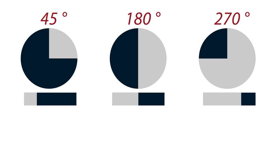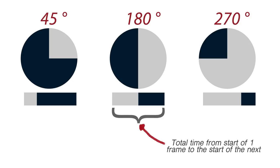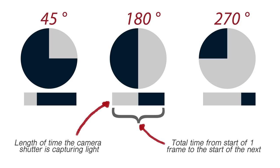Here's a diagram showing the relationship between frame rate and shutter speed. The rectangle shows the total length of time from the start of one frame to the start of another. Keep in mind, if you're shooting at 60 frames per second, this process will happen 60 times in one second. The gray area of the rectangle shows the length of time the shutter is open. The 180 degree shutter angle rule says that the shutter should be open for half of the total time of the frame.